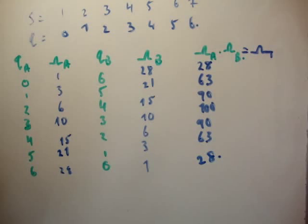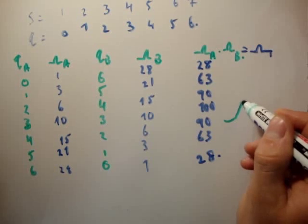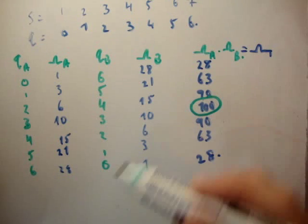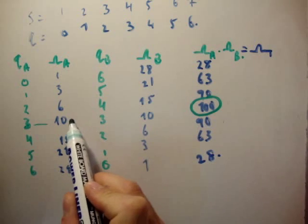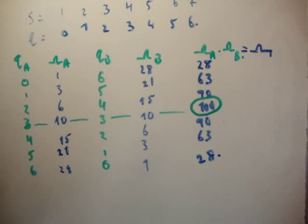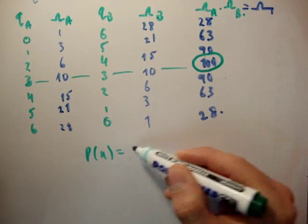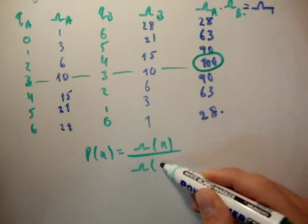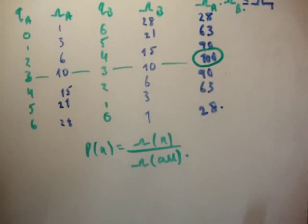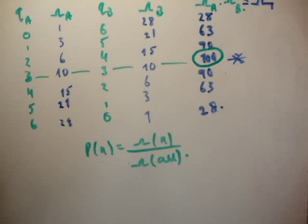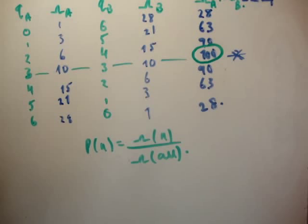Looking at that table tells you something. The total multiplicity follows a Gaussian-like function, peaking at 100 when Q_A = 3. That maximum corresponds to when there is an equal amount of energy in Einstein solid A and Einstein solid B — three units of energy in each. The probability of macrostate N equals the multiplicity of that state divided by the sum of all multiplicities, so the most probable macrostate is the one with the greatest multiplicity.